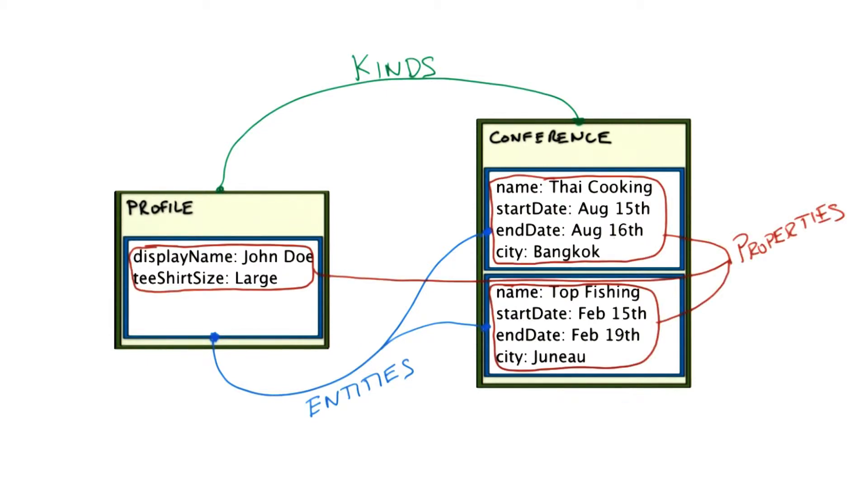And each entity holds a set of properties which are highlighted by the red sections in this picture. And by now you can see the properties are very similar to the concept of fields, members, or attributes in object oriented programming.